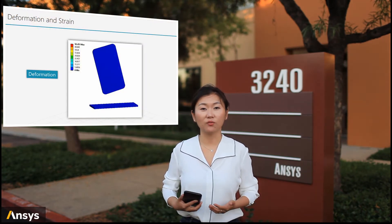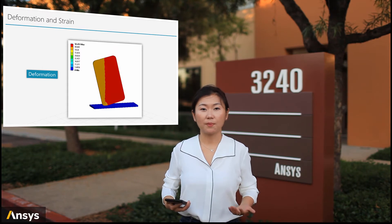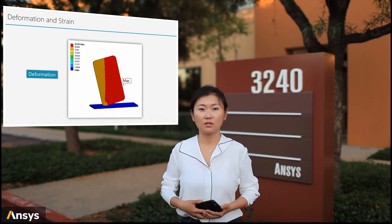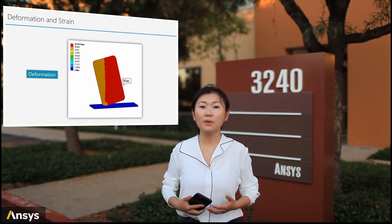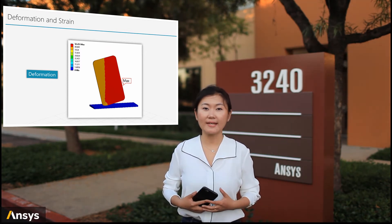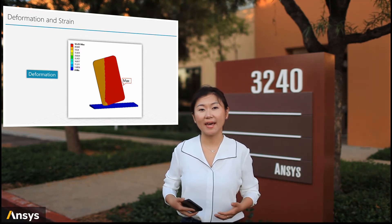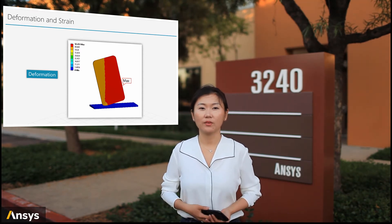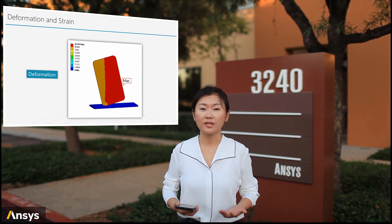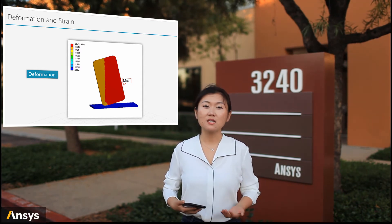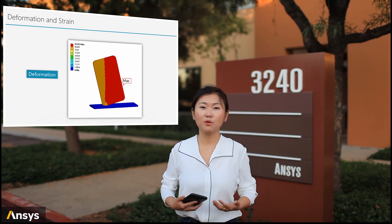For the deformation contour over the cell phone, red color represents maximum value while blue color represents minimum values. We can see that at the moment the left corner of the cell phone hits the ground, the maximum value of deformation is located at the right half of the cell phone — the corner that hits the ground is not even included in the red area.